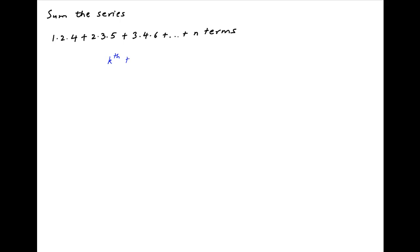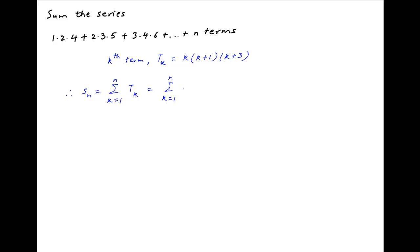Let's start by noting that the kth term of this series, denoted by T_k, is equal to k times (k+1) times (k+3). Therefore, the sum to n terms of the given series is equal to the summation of T_k, where k goes from 1 to n. This is equal to the summation of k times (k+1) times (k+3).